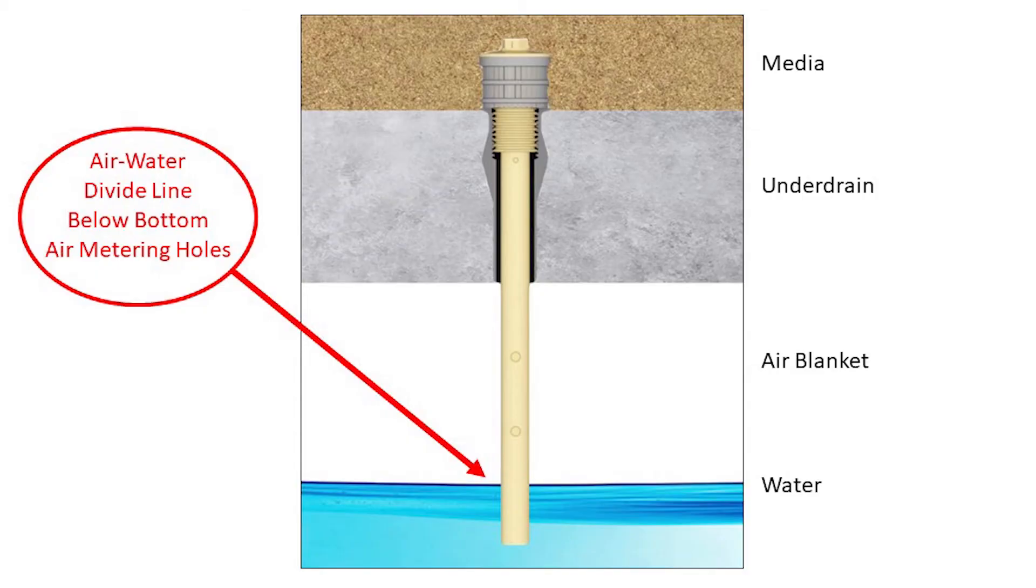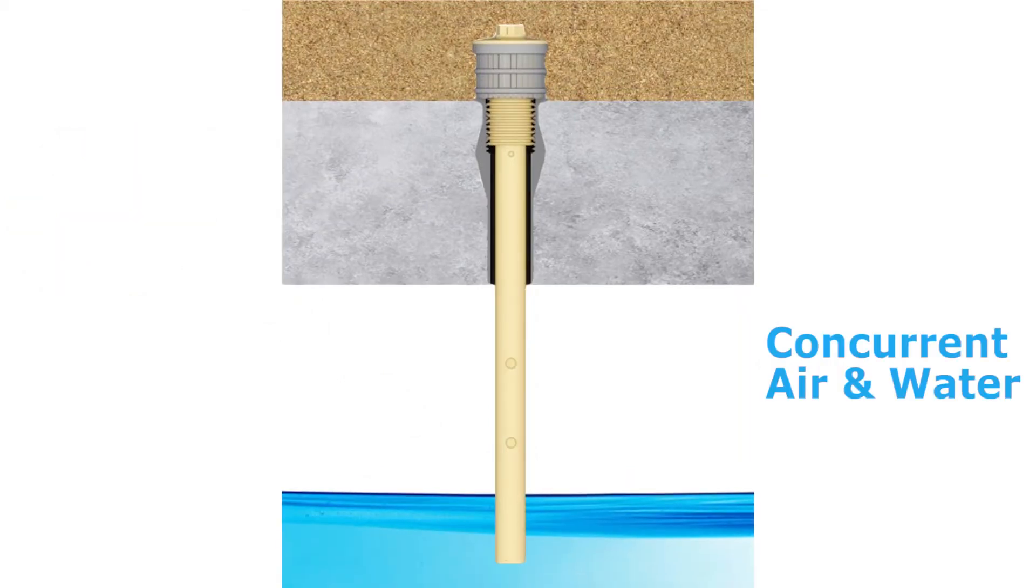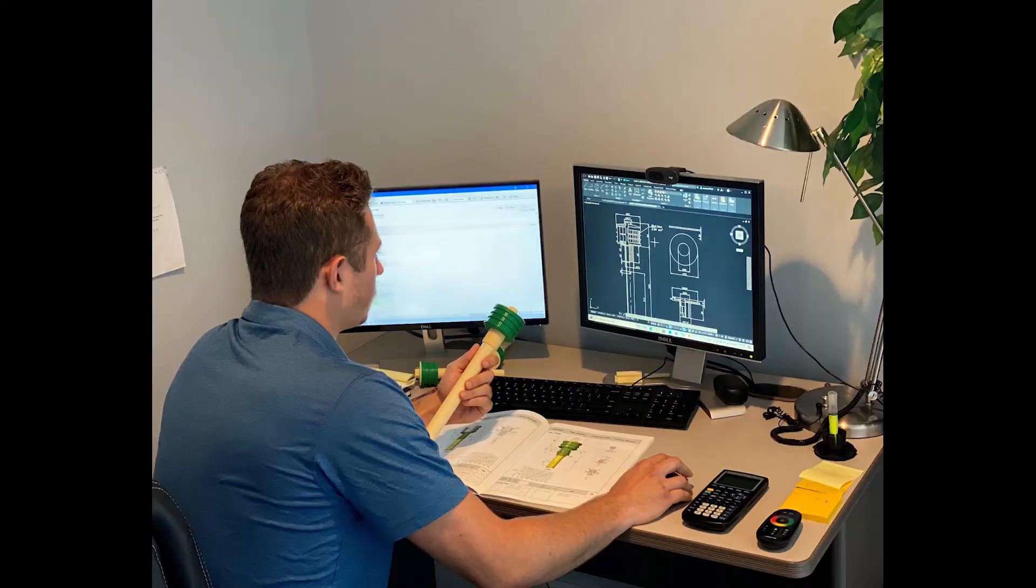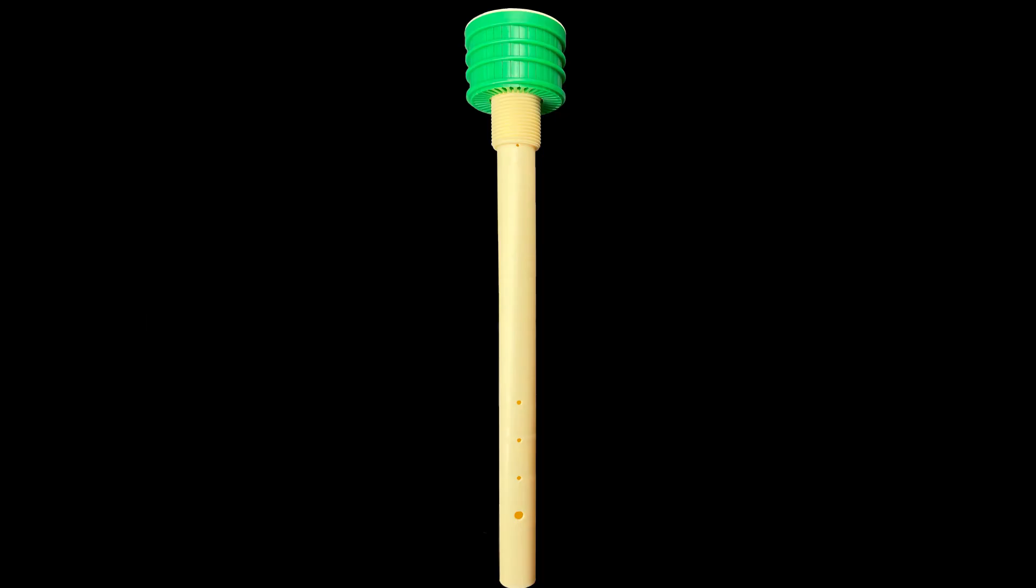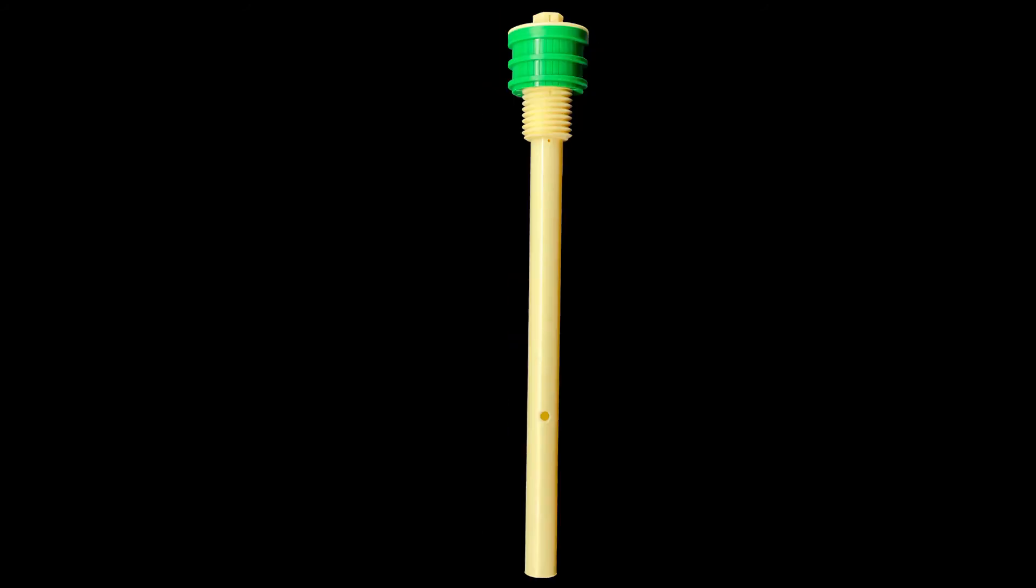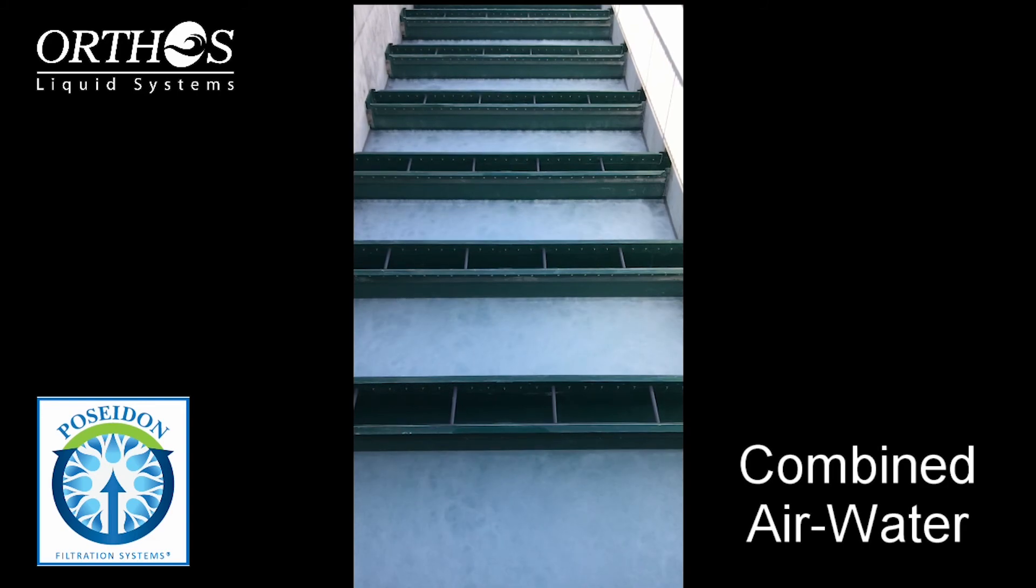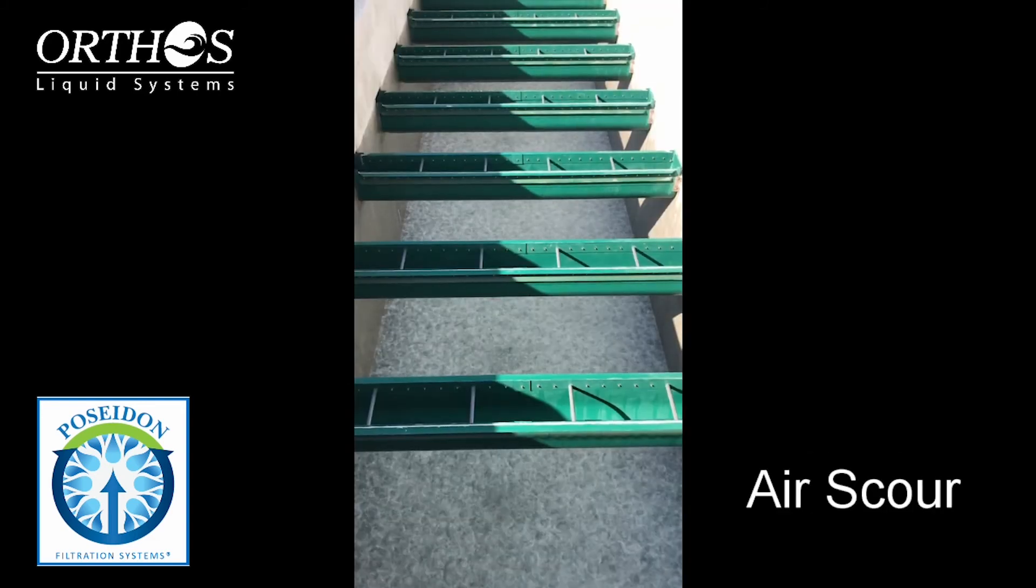For concurrent air water backwash applications, the air blanket is compressed within the plenum when backwash pumps are turned on, which adds some design complexity. Orthos engineering staff will select the proper combination of air metering hole quantity, location, and size to ensure excellent distribution during concurrent backwash as well as the air only initial phase.